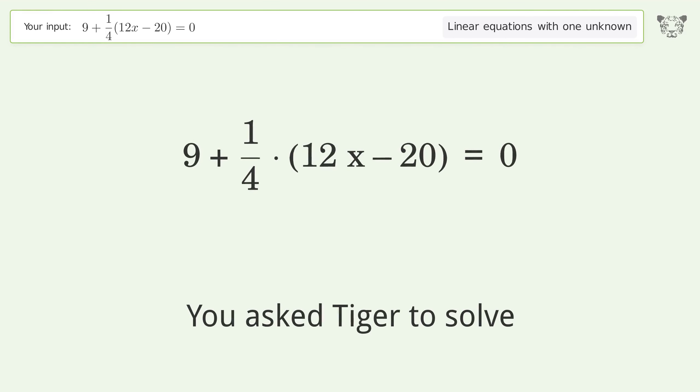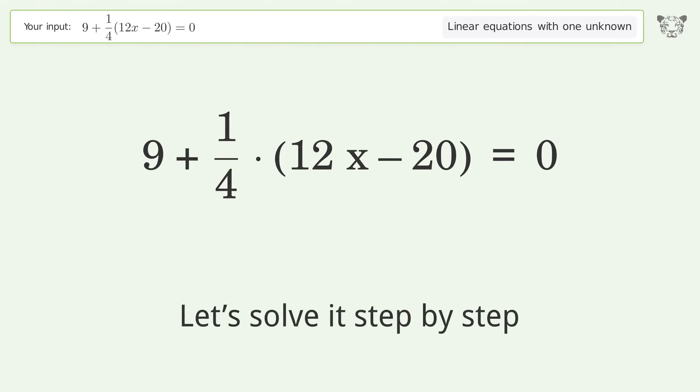You asked Tiger to solve this. This deals with linear equations with one unknown. The final result is x equals negative 4 over 3. Let's solve it step by step.